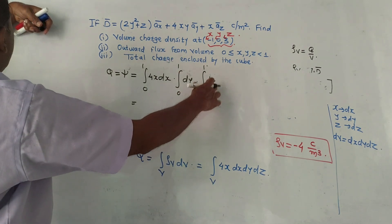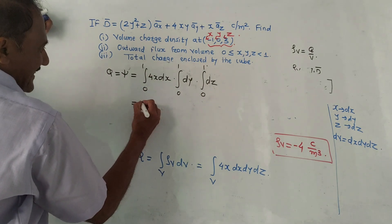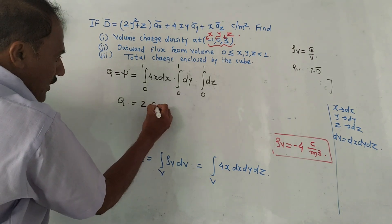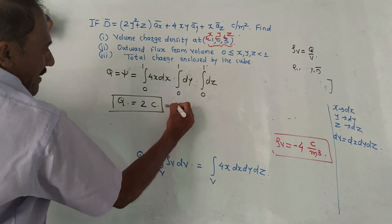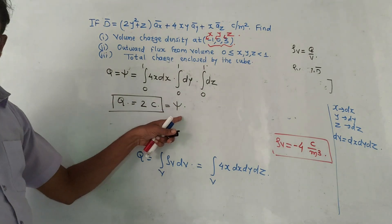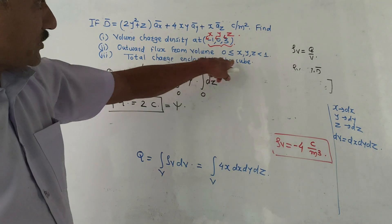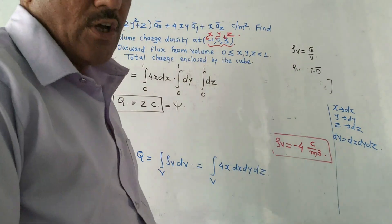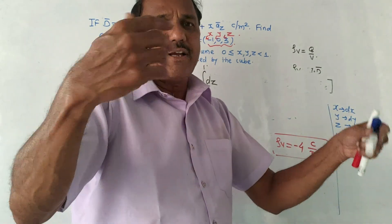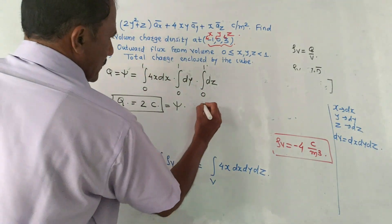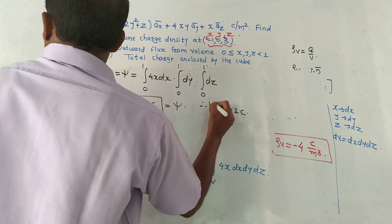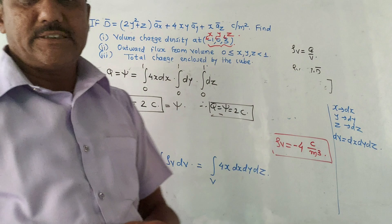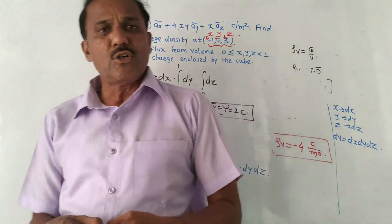Solving this integration, the answer is 2. So Q equals 2 coulombs, which is also the value of Ψ (total flux). For part three, according to Gauss Law, the charge enclosed equals the total flux coming out from that surface. Therefore, charge enclosed Q = Ψ = 2 coulombs. This is the final answer. That's it for today's session — thank you for watching this video.